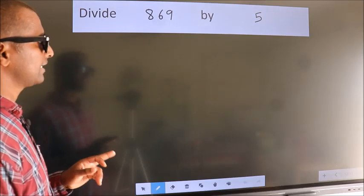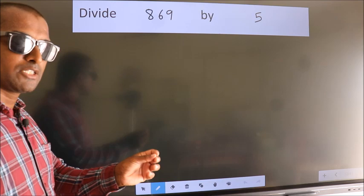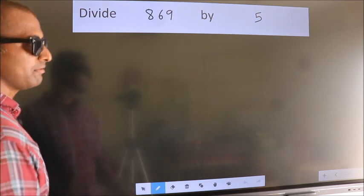Divide 869 by 5. To do this division, we should frame it in this way.